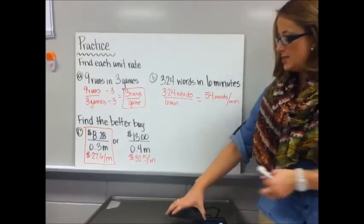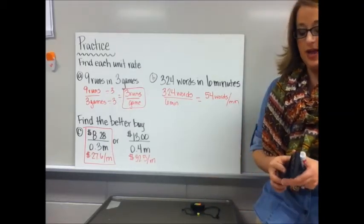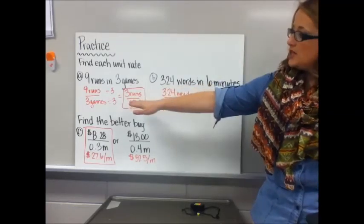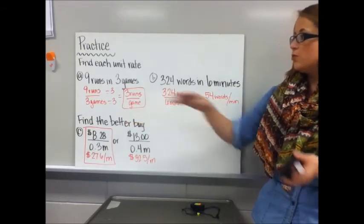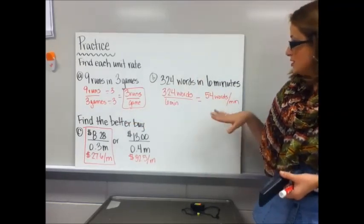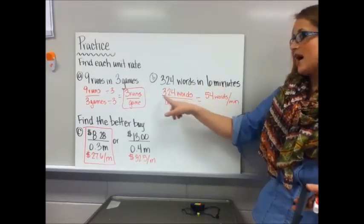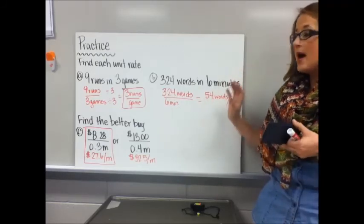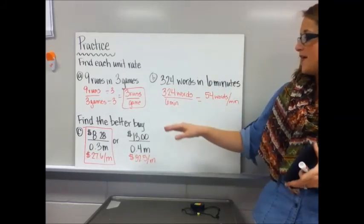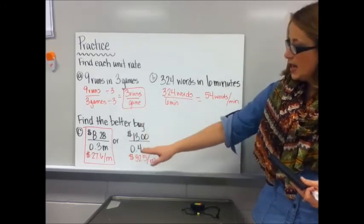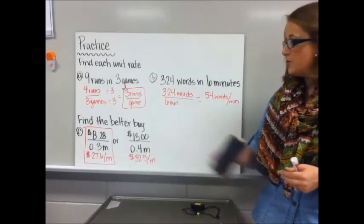On problems A and B, I purposely solved them two different ways. Problem A: nine runs in three games. I divided top and bottom both by three — nine divided by three is three, three games divided by three is one game — so the answer is three runs per game. Problem B: 324 words in six minutes. Dividing 324 by six gives 54, so the unit rate is 54 words per minute. Part C, to find the better buy, I divided each quantity and got $27.6 per meter for the first option and $32.5 per meter for the second — the first one is the better buy.